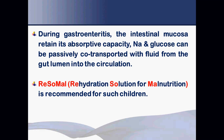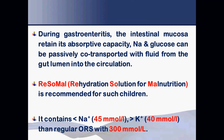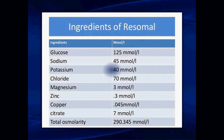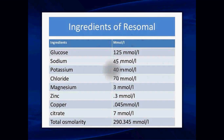ReSoMal (Rehydration Solution for Malnutrition) is a special ORS formula for malnourished children with dehydration. It contains less sodium — because these children are at risk of hypernatremia — and more potassium, because they commonly have hypokalemia. Its osmolarity is different from the standard ORS, and its ingredients should be known.